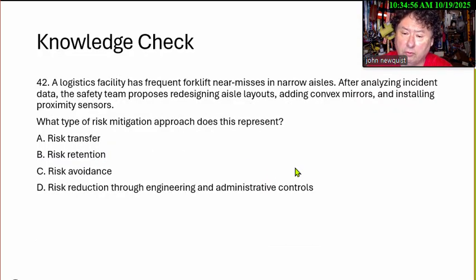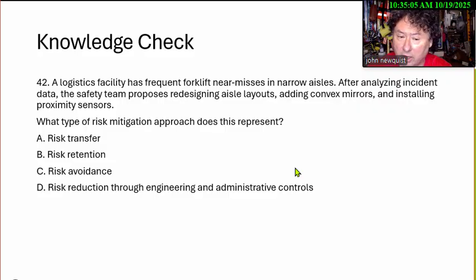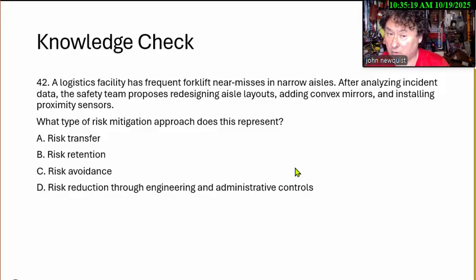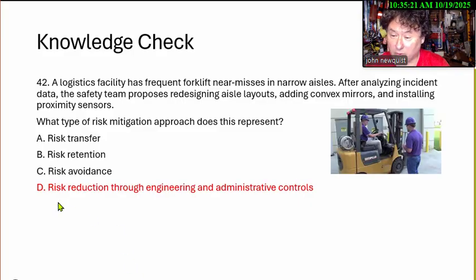A logistic facility has frequent forklift near-misses in narrow aisles. After analyzing incident data, the safety team proposes redesigning aisle layouts, adding convex mirrors, and installing proximity sensors. What type of risk mitigation approach does this represent? A, risk transfer. B, risk retention. C, risk avoidance. D, risk reduction through engineering and administrative controls. Always that longest answer — risk reduction.